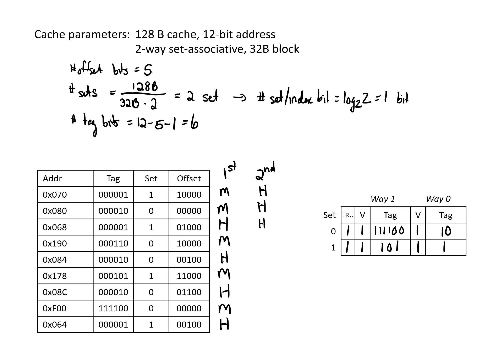For the fourth access in the second pass, we're looking at set 0 for tag 1,1,0. This isn't in the cache, so it's a miss. Our LRU bit says to replace way 1, so we fill it in with 1,1,0 and update our LRU bit to point to way 0. The next access looks at set 0 for tag 1,0 — that's in the cache, so it's a hit. We update our least recently used bit to say that way 1 is now least recently used, since we just accessed way 0.